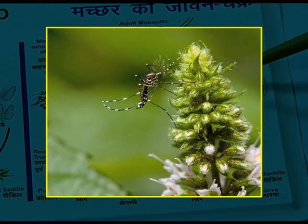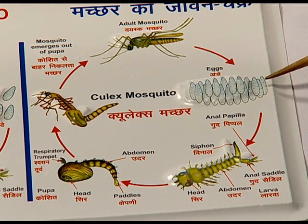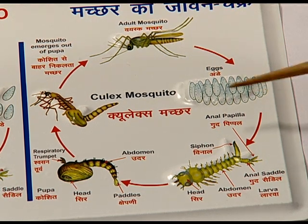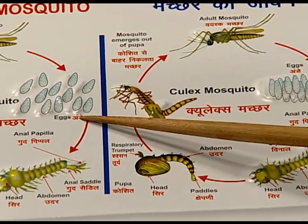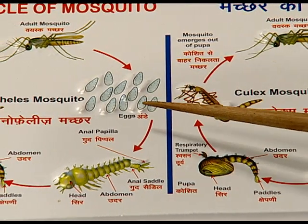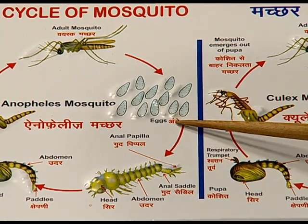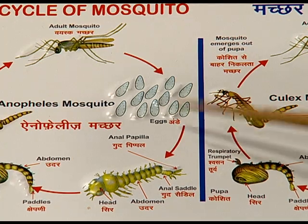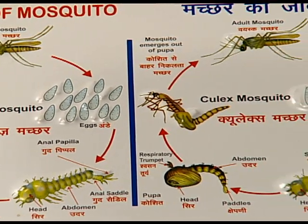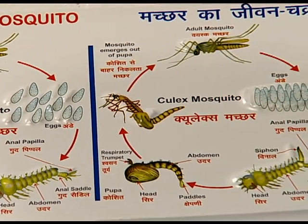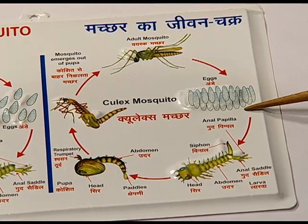These eggs are laid in groups or as individuals. In Anopheles, the eggs are separately laid, whereas in Culex mosquito these eggs form a raft-like structure.